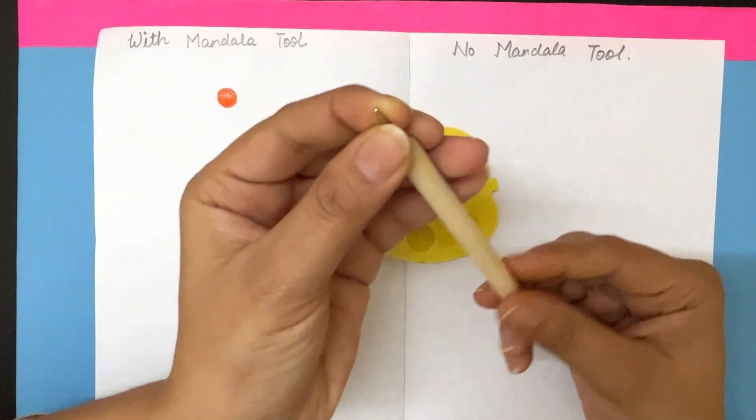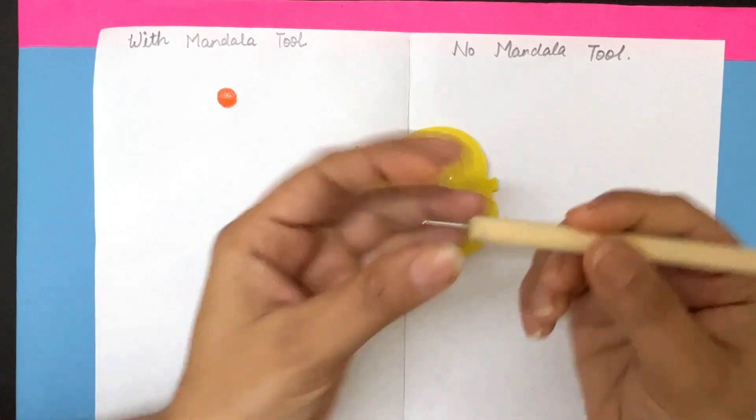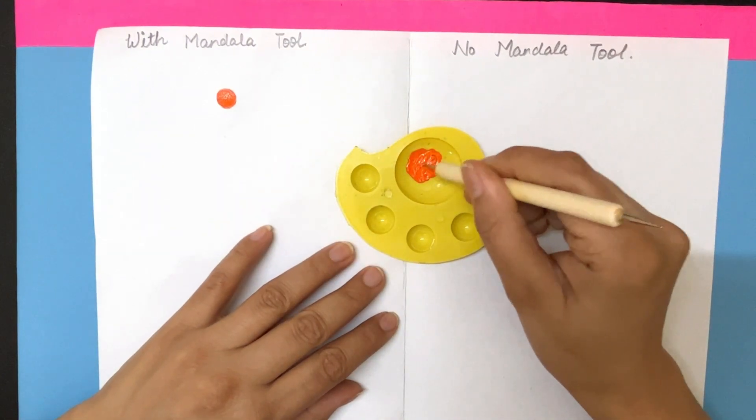To create small dots, use a small size round tool. For larger dots, go for a bigger tool.